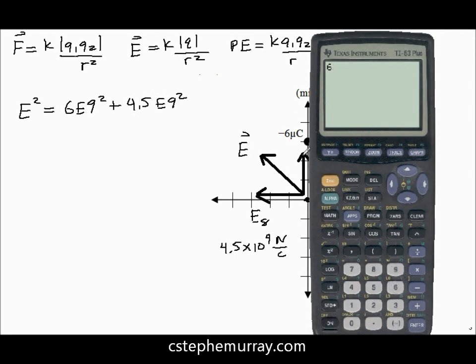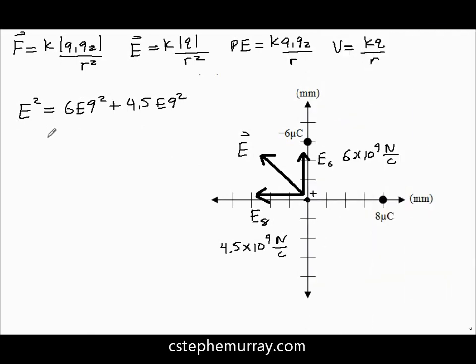So let's go ahead and bring in our calculator over here, 6E9 squared plus 4.5E9 squared equals, take the square root, the answer, 7.5. We'll clear that and come back and use you later. Here, equals 7.5 times 10 to the 9th newtons per coulomb.